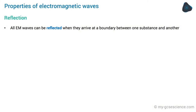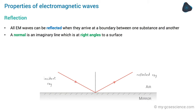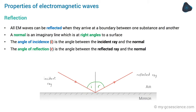All electromagnetic waves can be reflected when they arrive at a boundary between one substance and another. We can draw a normal at the point where light strikes the mirror — an imaginary line at right angles to the surface. The angle between the normal and the incident ray is called the angle of incidence (I), and the angle between the normal and the reflected ray is called the angle of reflection (R). No matter what type of wave or surface, the angle of incidence always equals the angle of reflection.